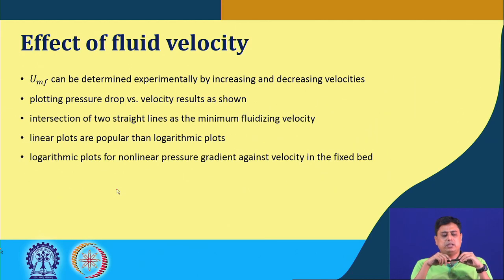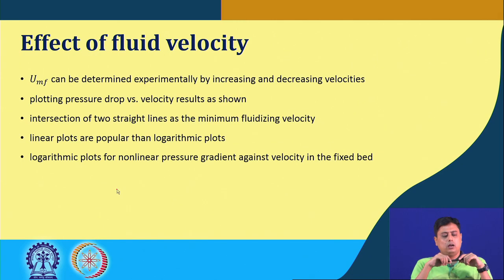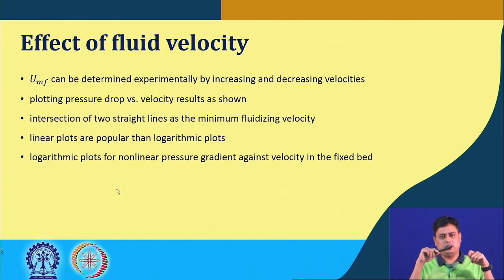The minimum fluidization velocity U_MF can be determined experimentally by increasing and decreasing velocities and plotting pressure drop versus velocity results. Practically, the intersection of these two straight lines — or the best-fit between experimental points while increasing and decreasing the superficial velocity — gives the two pressure drop lines. The intersection of their best-fit linear fits is detected as the minimum fluidizing velocity.